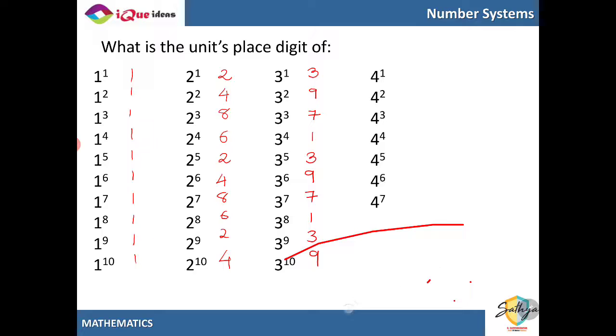For 4, let us see how this works out. 4 to the power 1 ends in 4, 4 square 16 ends in 6, 4 cube 64, 4 raised to power 4, 256. So alternately it ends in these numbers. And for power 5, as we have already seen, whatever be the power, if the base is 5, then it always ends in the number 5.